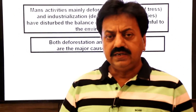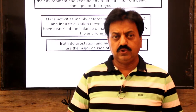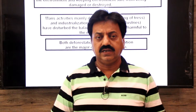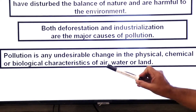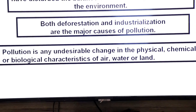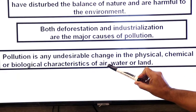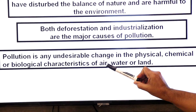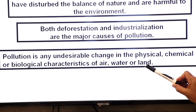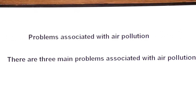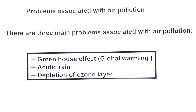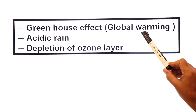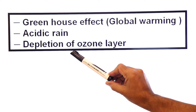We can define pollution: pollution is an undesirable change in the physical, chemical, or biological characteristics of air, water, and land. The effects of pollution include global warming, acidic rain, and depletion of the ozone layer.